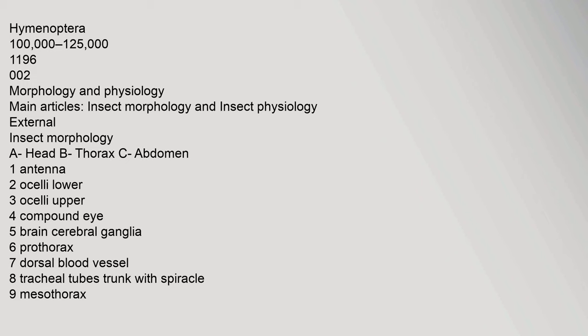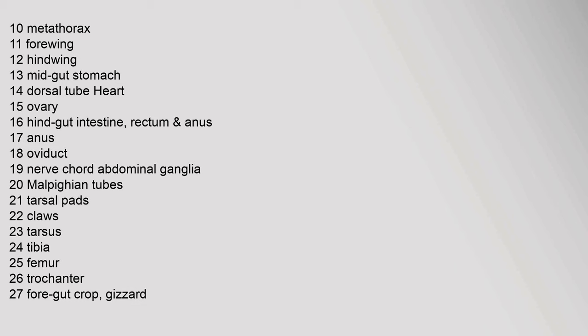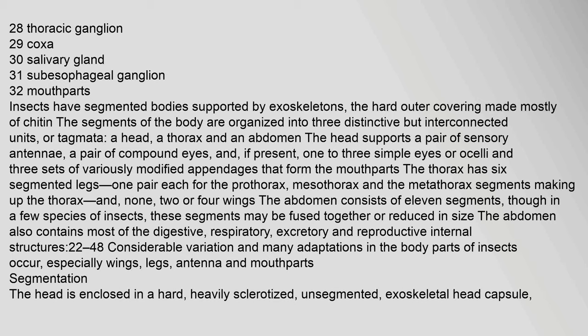Insects have segmented bodies supported by exoskeletons — the hard outer covering made mostly of chitin. The segments of the body are organized into three distinctive but interconnected units or tagmata: a head, a thorax, and an abdomen. The head supports a pair of sensory antennae, a pair of compound eyes, and, if present, one to three simple eyes or ocelli, and three sets of variously modified appendages that form the mouthparts.